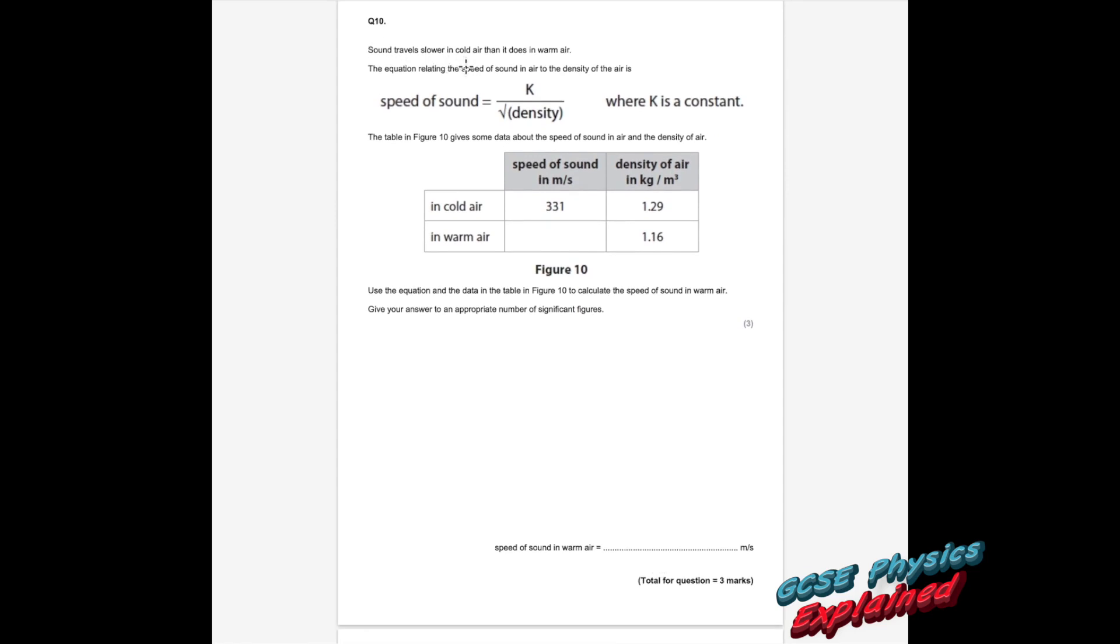Question 10. Sound travels slower in cold air than it does in warm air. The equation relating the speed of sound in air to the density of the air is: speed of sound equals k over square root of density, where k is a constant. The table in figure 10 gives some data about the speed of sound in air and the density of air. It tells us in cold air what the speed was and what the density was. In warm air, it doesn't tell us the speed but it does tell us the density. Use the equation and the data to calculate the speed of sound in warm air. Give your answer to an appropriate number of significant figures. That's 1, 2, 3 significant figures for all values, so we need to use 3 significant figures.